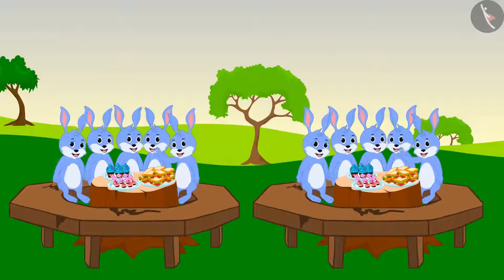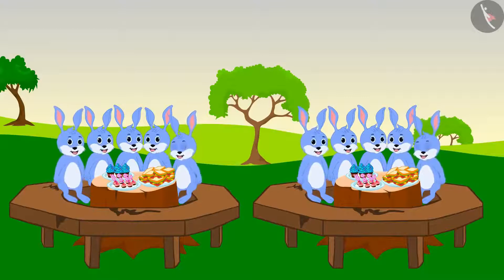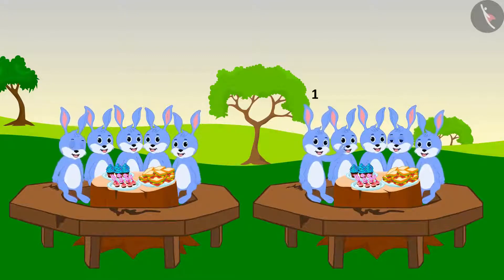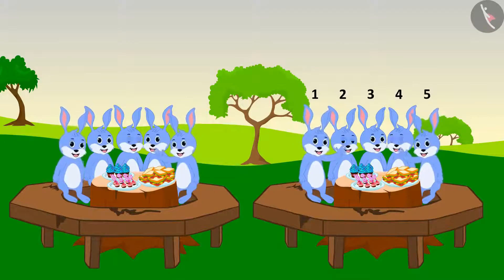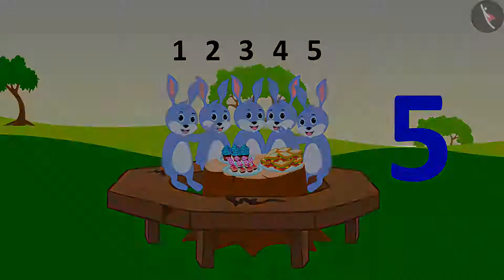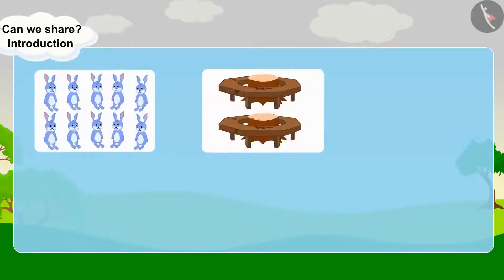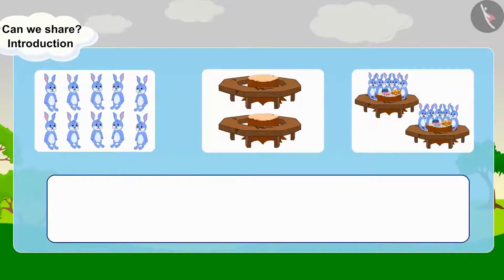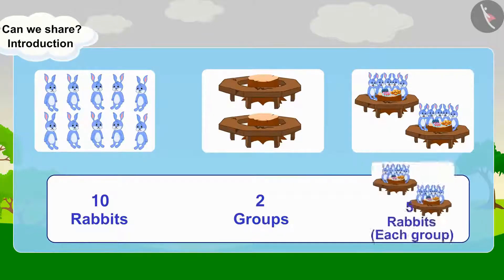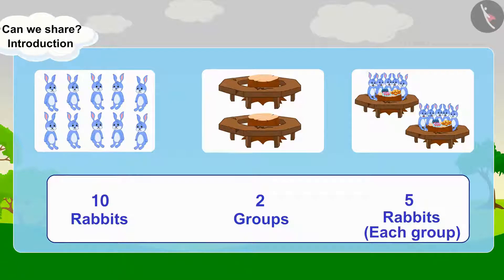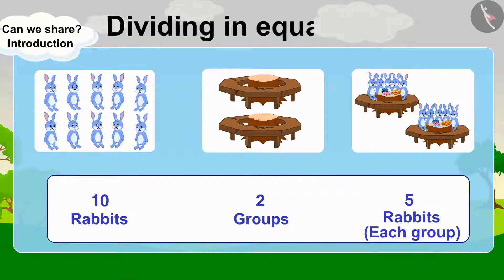Let us see how the rabbits are sitting. There are ten rabbits and they are sitting in two groups. Each group has five rabbits seated in them. A total of ten rabbits are seated in two groups, each group having five rabbits. It is called dividing in equal groups.